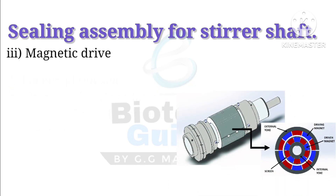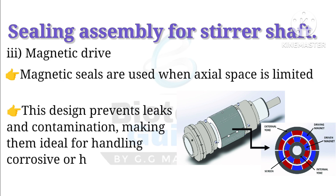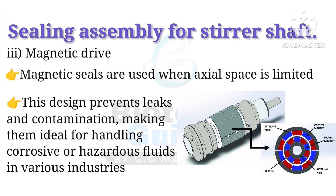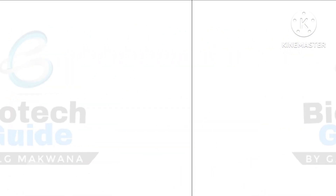The third is the magnetic drive seal. Magnetic drive seals are used when axial space is limited. This kind of design prevents leaks and contaminants, making them ideal for handling corrosive or hazardous fluids in various industries. These three are the main sealing assemblies for a sterile shaft.